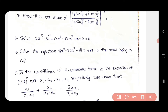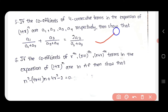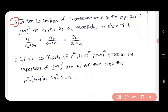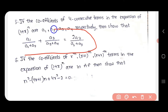The 6th question: if the coefficients of 4 consecutive terms in the expansion of (1 + x)^n are a1, a2, a3, a4 respectively, show that they relate to each other. You need to prove that. You can check the marks by looking at the final answer.